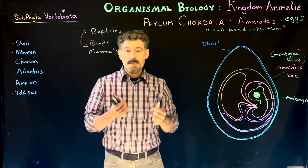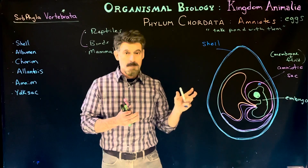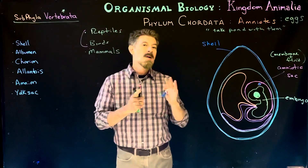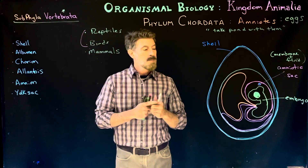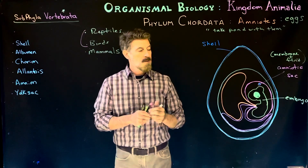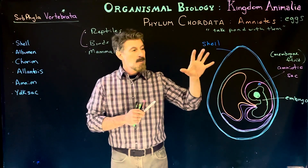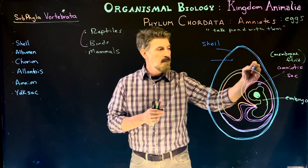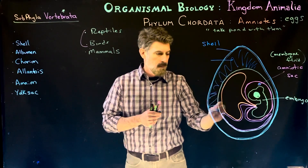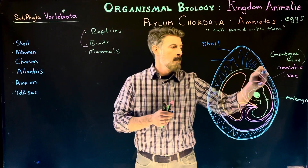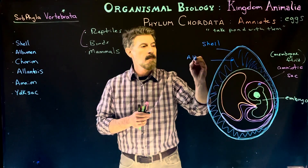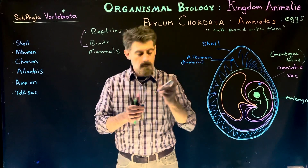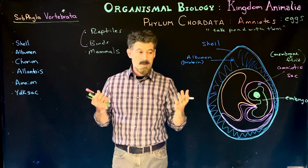First we have a shell. The shell differs between groups in terms of material: a bird shell is typically calcified and hard, whereas a reptilian shell is usually more soft and leathery and often requires moisture for the embryo to develop. The shell provides a protective environment. Inside the shell surrounding everything is fluid called albumin, which is a protein-rich fluid.